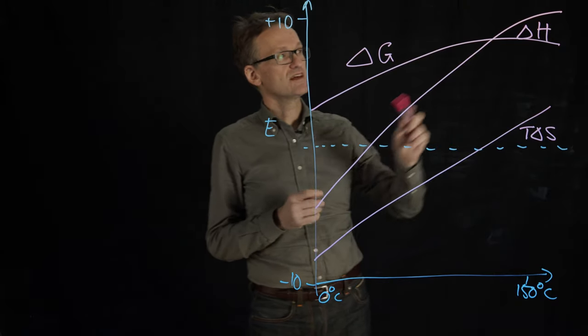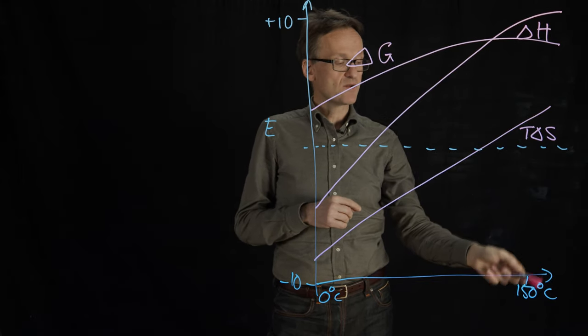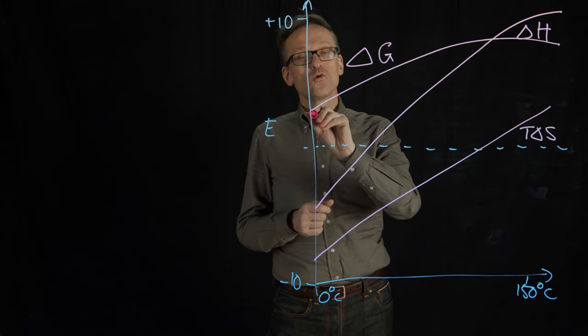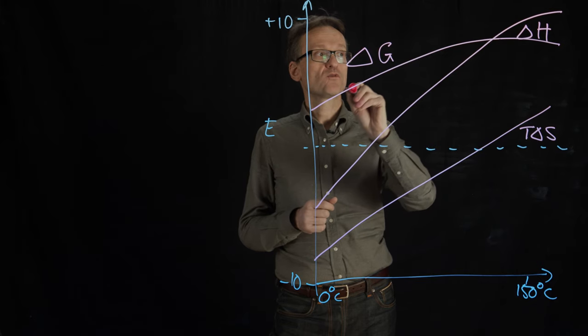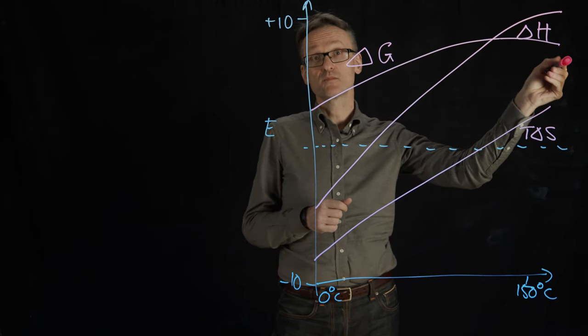The second part is that you see that you have a local maximum of ∆G here. In this case you'd have high pressure to reach temperatures this high, but if this is now oil in pasta water, that would mean that it would be more and more and more difficult to solvate the oil until you get to some point and then it starts to get better again.